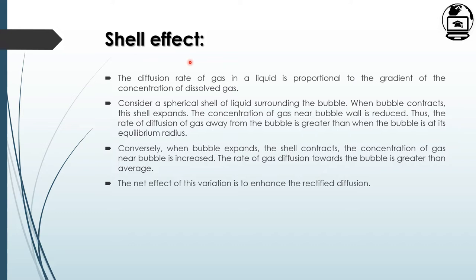The shell effect refers to the gas concentration difference between the liquid and dissolved gas. Considering a spherical shell of liquid surrounding the bubble: when the bubble contracts, the shell expands, the concentration of gas in the bubble reduces, and the rate of diffusion away from the bubble is greater than at equilibrium. When the bubble expands, the shell contracts, concentration increases, and diffusion toward the bubble is greater than average. This net variation enhances rectified diffusion.